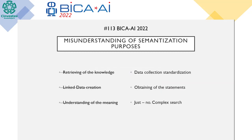Moving on, about the problems. Everything is simple here. On the left we have expectations and on the right, reality. First of all, it's permissible to call a knowledge graph a semantic storage containing the most complete description of a certain subject area. But at the same time, it contains only a large structured set of facts — related facts, but not knowledge.